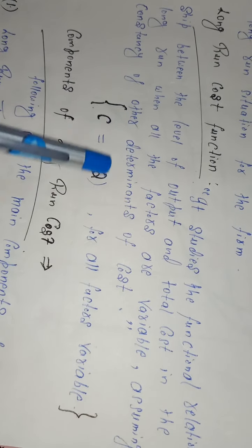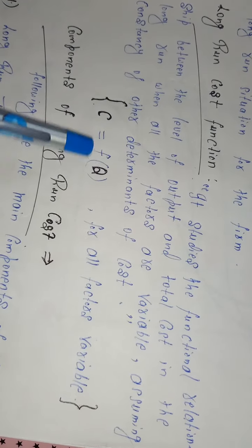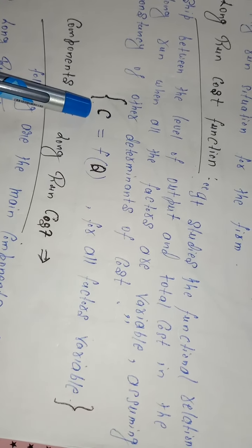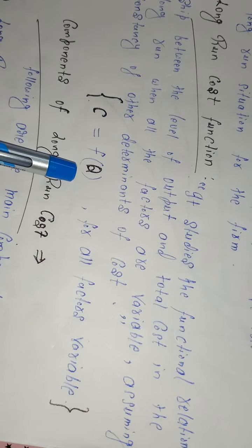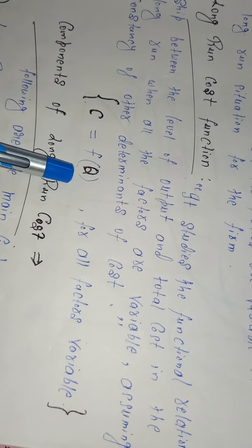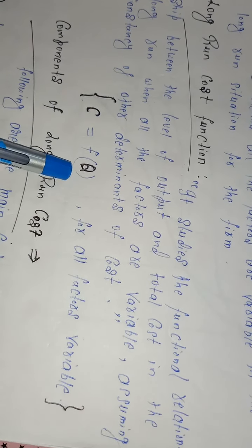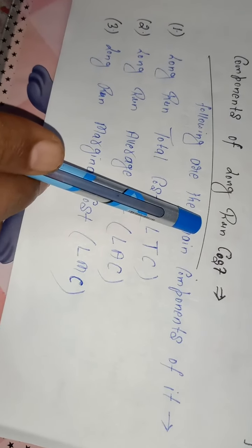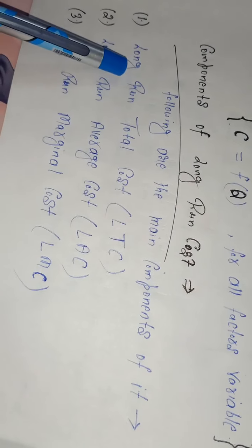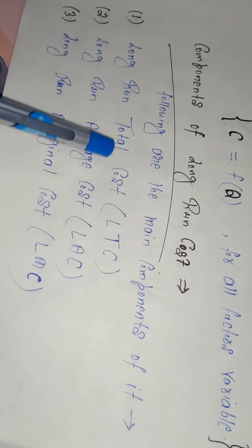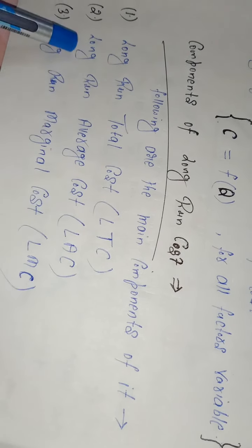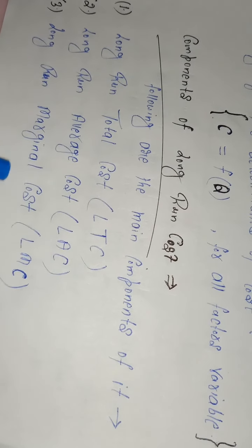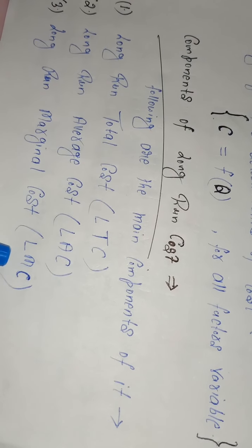Assuming consistency of other determinants of cost, the different components of long run cost are categorized into three types: long run total cost (LTC), long run average cost (LAC), and long run marginal cost (LMC). We will discuss these components one by one.